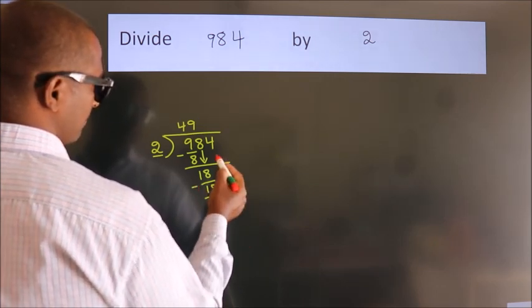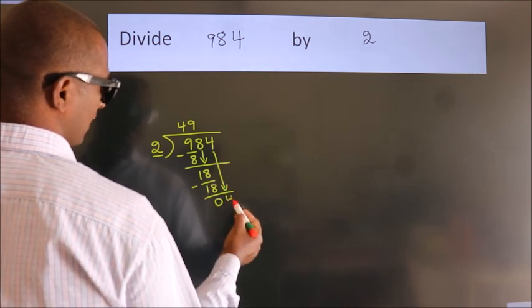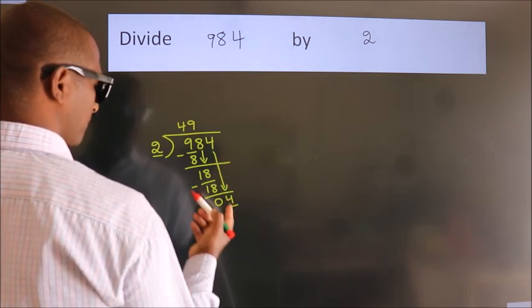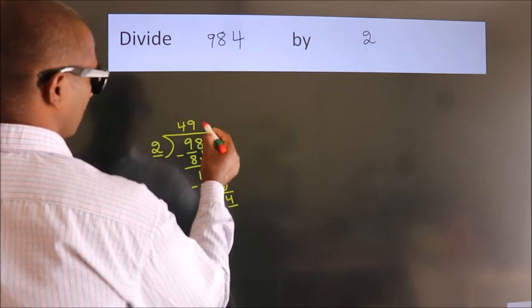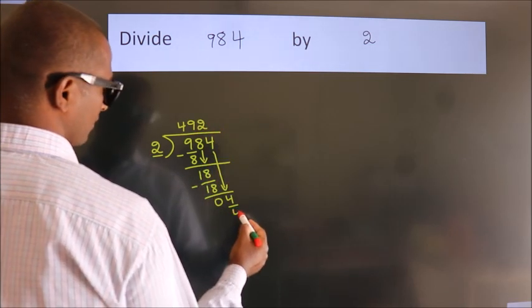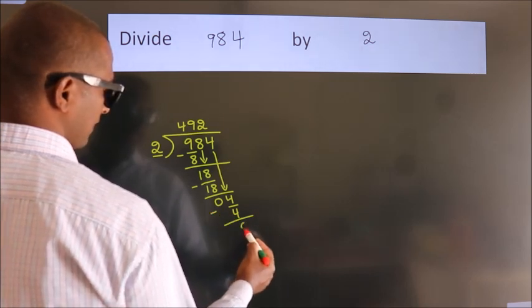After this, bring down the beside number. So 4 down. So 4. When do we get 4? In 2 table. 2 twos, 4. Now, we subtract. We get 0.